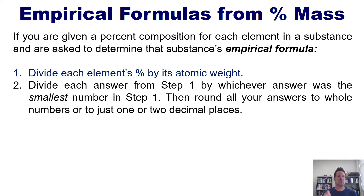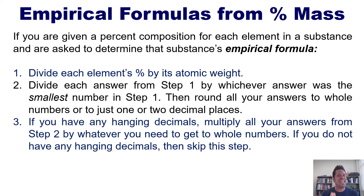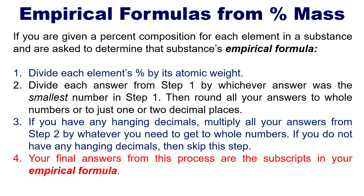Step two: divide each answer from step one by whichever answer was the smallest number in step one. Then you round all of your answers to whole numbers, or if you have a decimal that's right in the middle of two numbers like 1.5 or 1.6, just round it to one or two decimal places. Step three: if you have any hanging decimals left over, multiply all of your answers from step two by whatever you need in order to get them really close to or exactly at whole numbers. If you do not have any hanging decimals, skip this step. These are the subscripts of your empirical formula for each respective element.